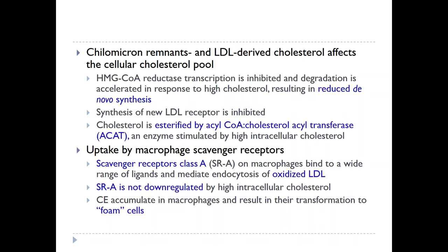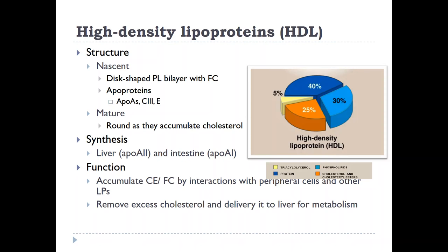We have now reached the fourth class of lipoproteins: high-density lipoproteins. As their name suggests, they have a high percentage of proteins, which makes them really small and really dense. However, they also have a large percentage of cholesterol and cholesterol esters. The integral apoproteins are from class A; they also have class C and E apoproteins, which are transferred to and from VLDL and chylomicrons. When formed, HDL has a disc shape; however, the more cholesterol they accumulate, the rounder and bigger they become — and that is how they mature.